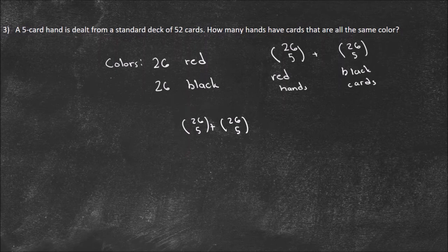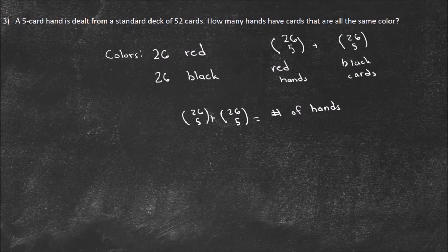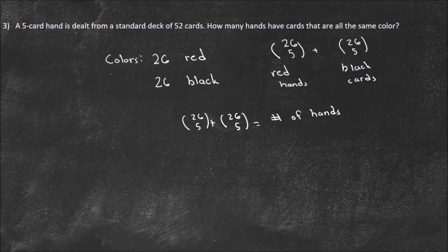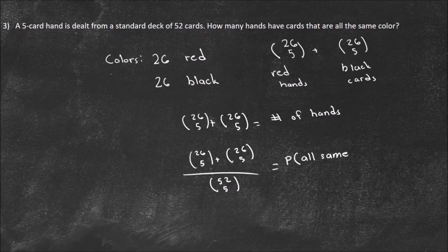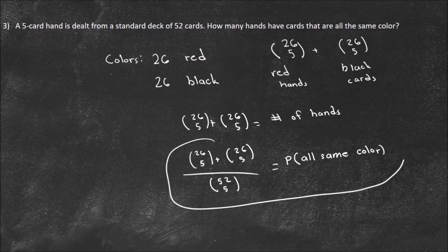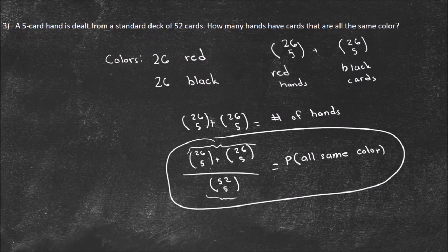The common follow-up question is: what is the probability of drawing a hand with cards all the same color? That's important for poker. The probability equals the number of same-color hands — which is 26 choose 5 plus 26 choose 5 — divided by all possible poker hands, which is 52 choose 5. Notice that 26 choose 5 plus 26 choose 5 is not the same as 52 choose 5 — it's actually much, much smaller.